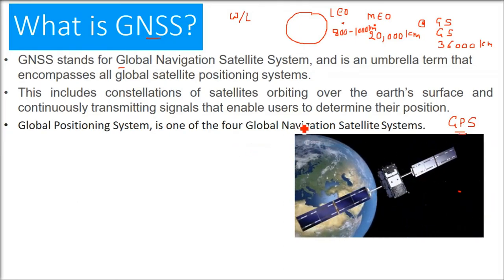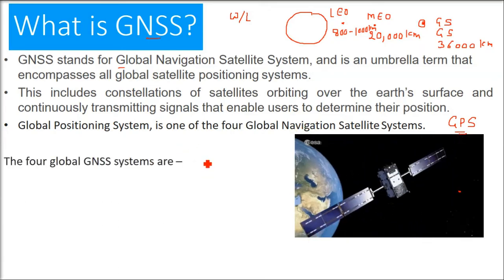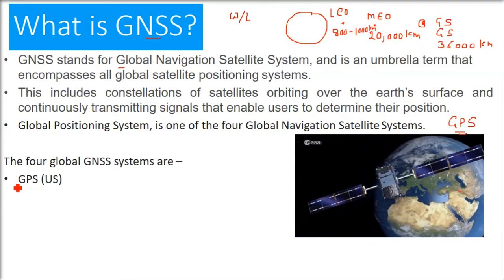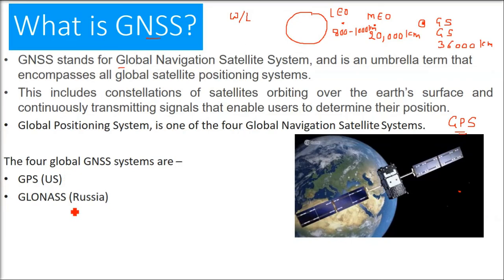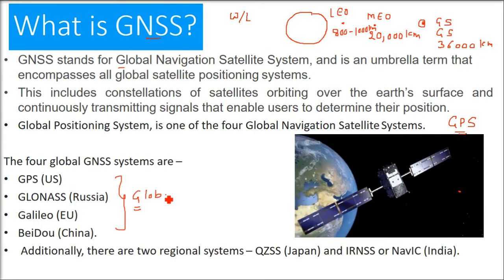GPS, Global Positioning System, is one of the four GNSS systems. We have four global GNSS systems: GPS Navstar from the United States, then we have Russian Federation's GLONASS, and we'll be talking about all these. Then European Union has Galileo, and BeiDou is the Chinese one. They are covering the whole world, the whole globe.